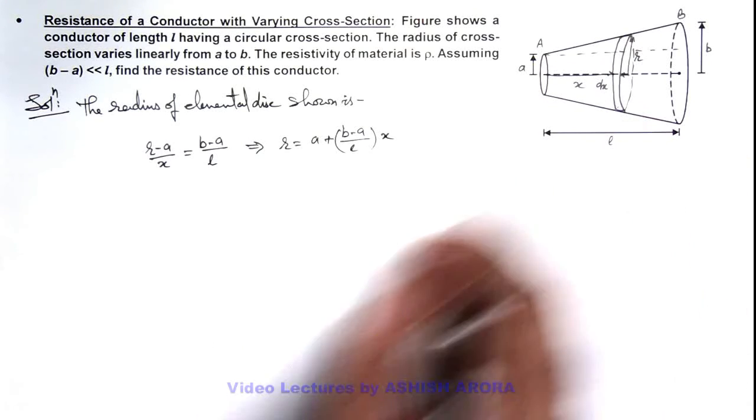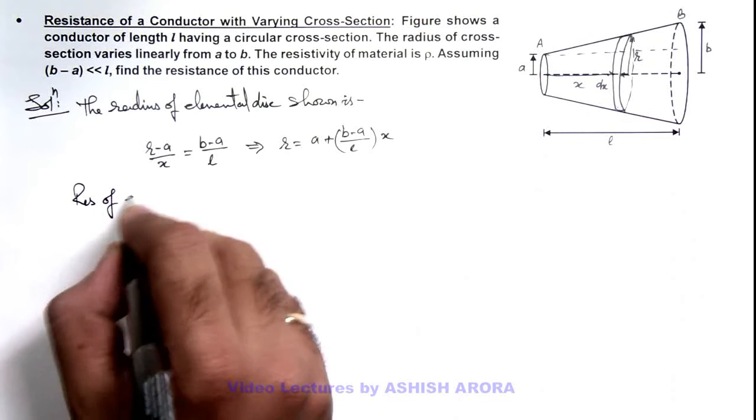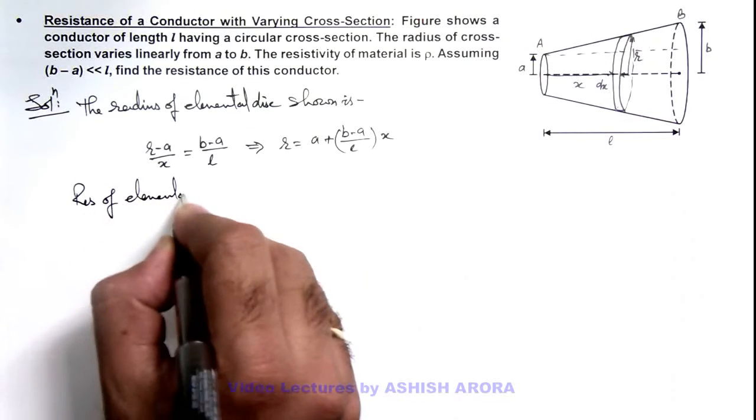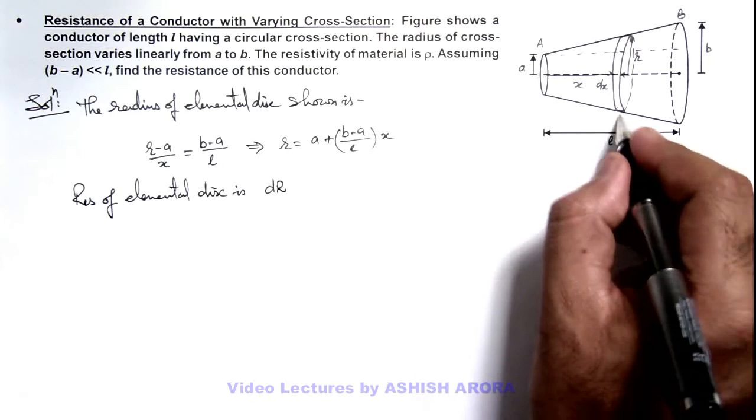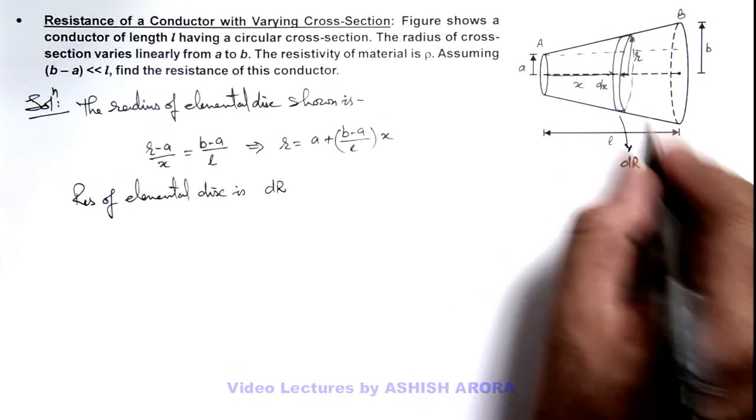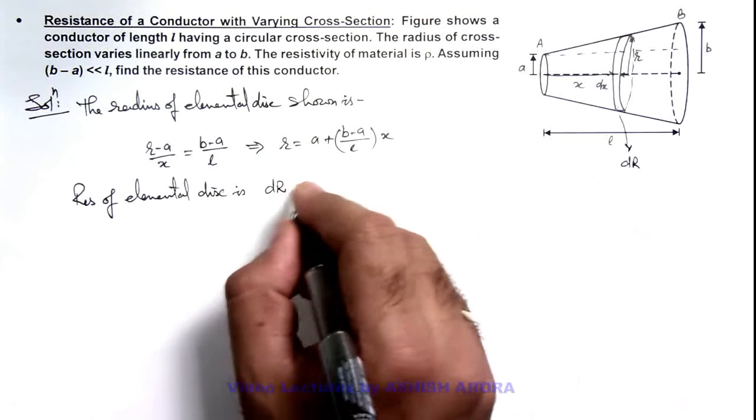So if this is the radius, we can calculate the resistance of the elemental disc. This can be written as dR—this is the resistance of this disc, of which the area can be taken as πr² and width is dx, so this is ρ.